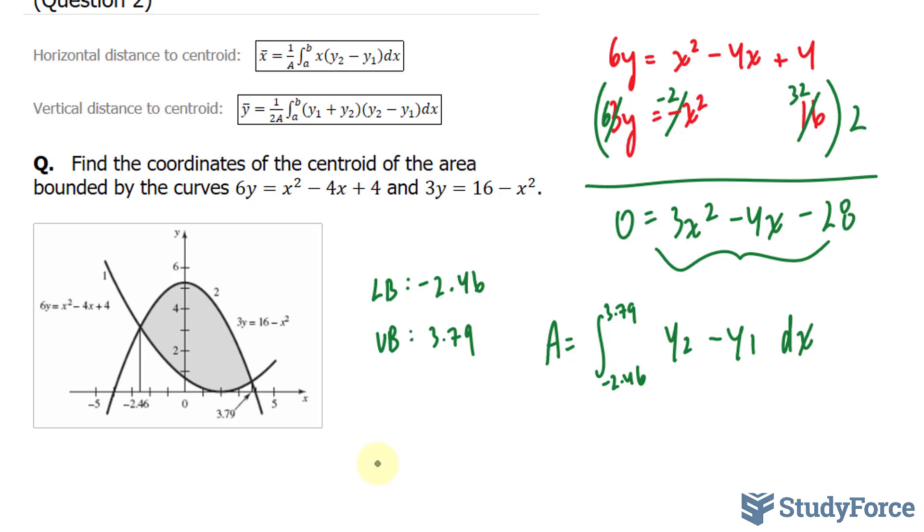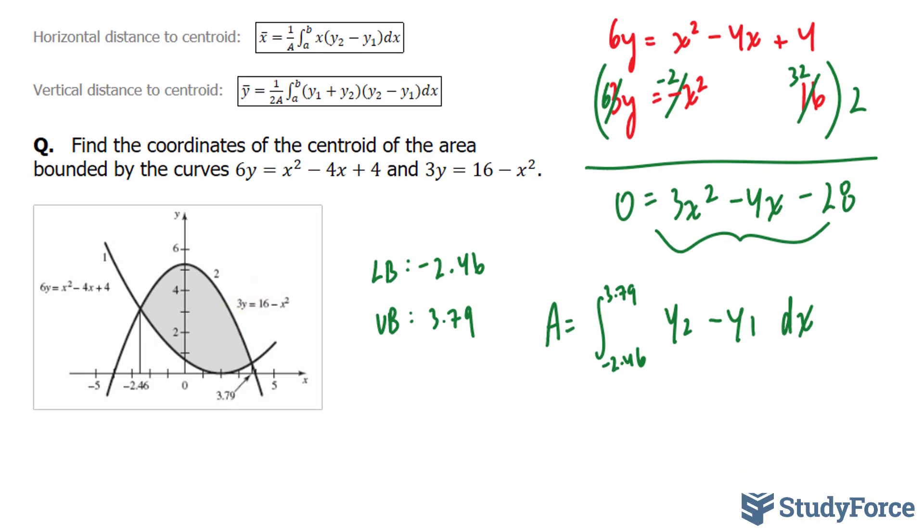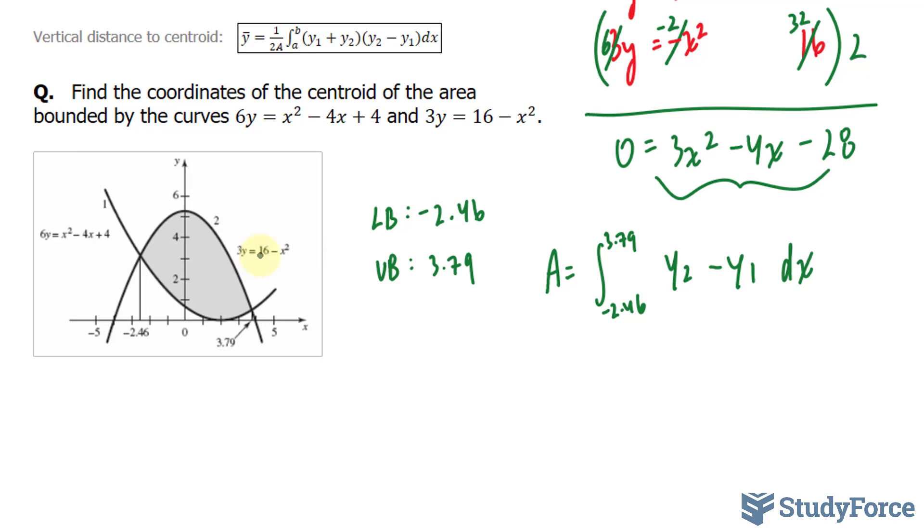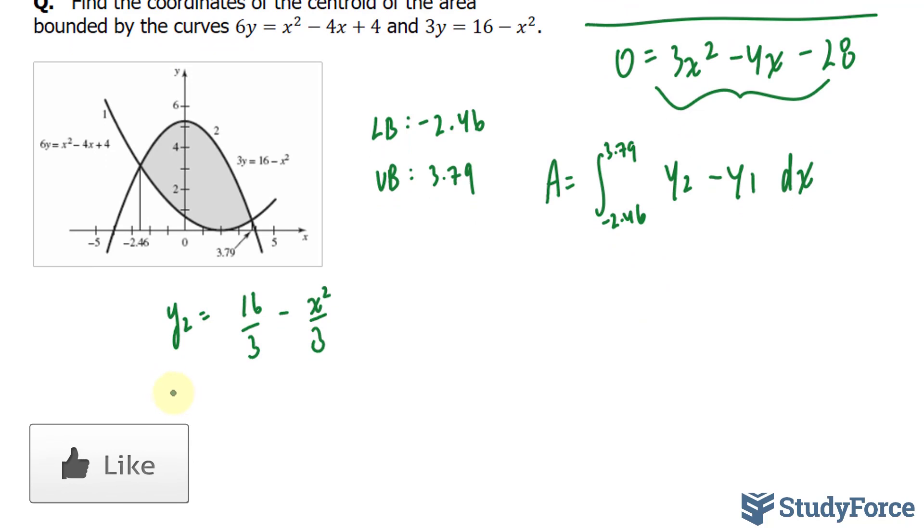Now before I subtract the two functions, I need to isolate for y in both cases. To isolate for y in this case is not hard to do. All I do is divide both sides by 3 where I end up with my y2 as 16 over 3 minus x to the power of 2 over 3. And for this equation, I'll divide both sides by 6, leaving me with y1 is equal to 1 sixth times x to the power of 2 minus 2 over 3x. I'm just reducing negative 4 over 6, became negative 2 over 3, plus 2 over 3.